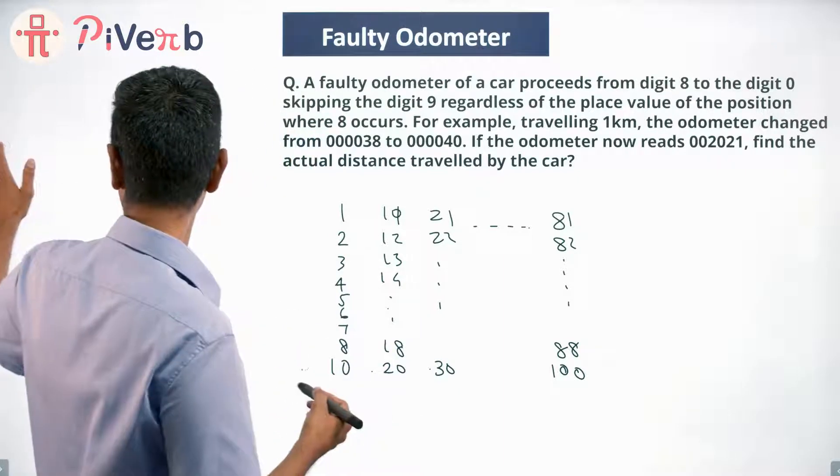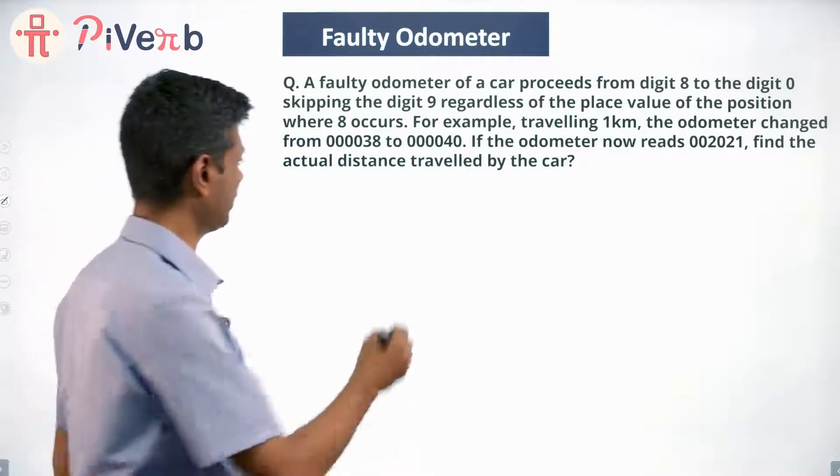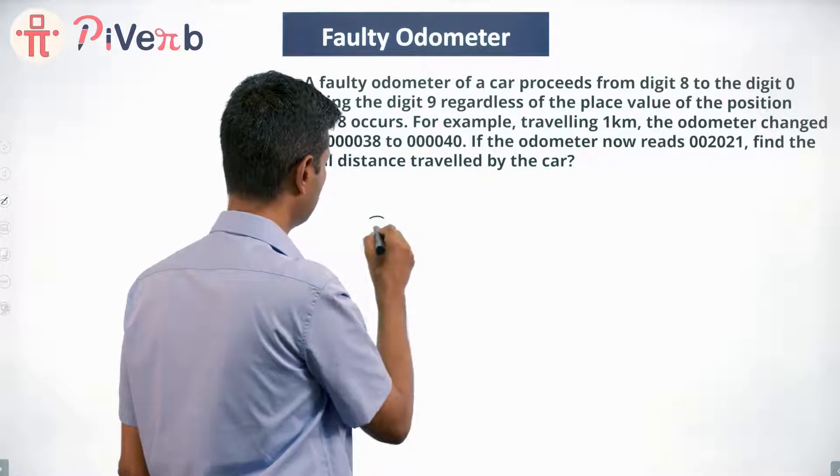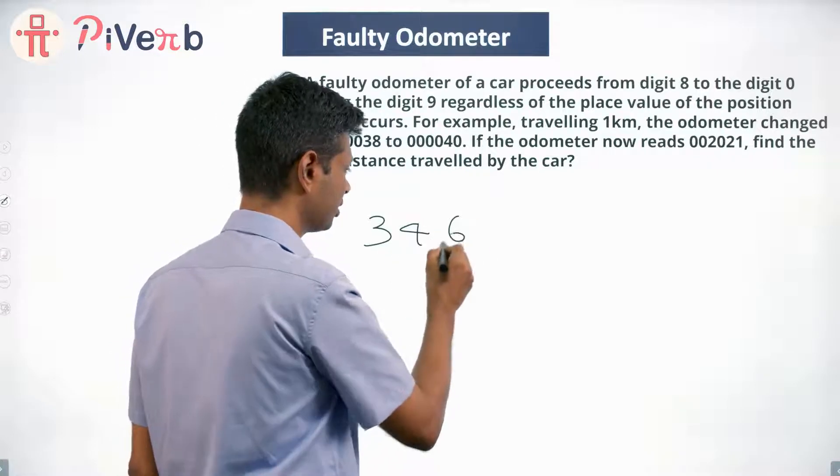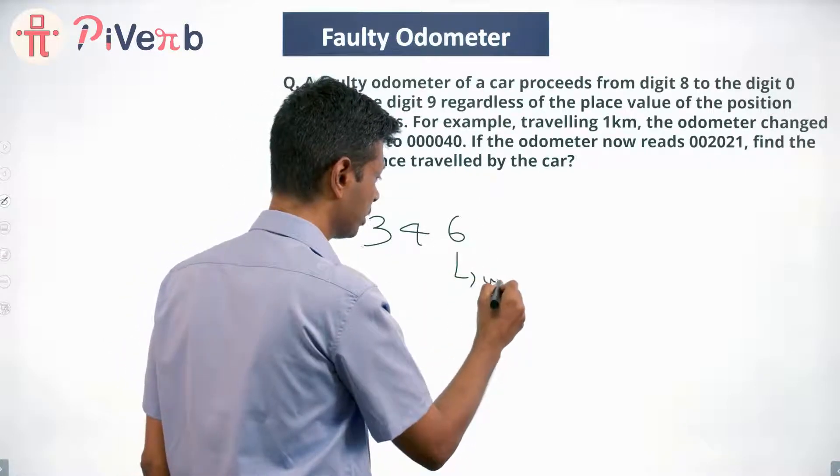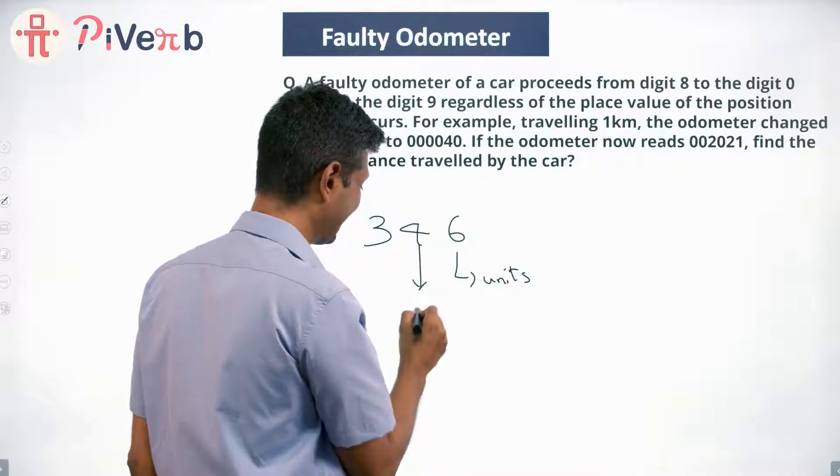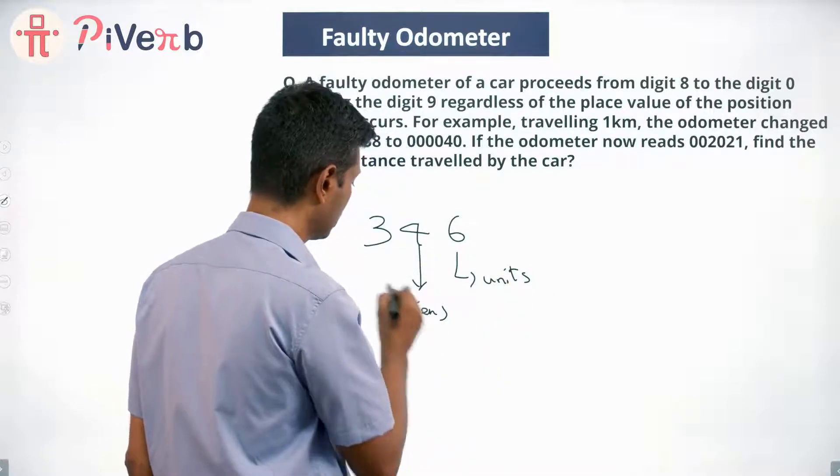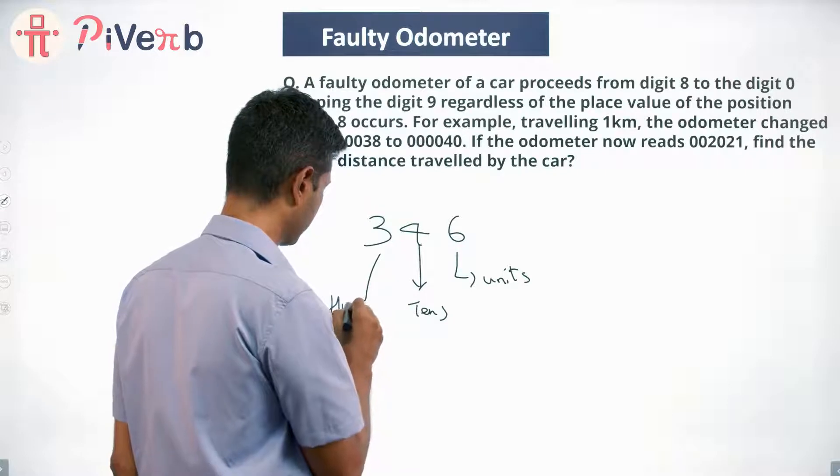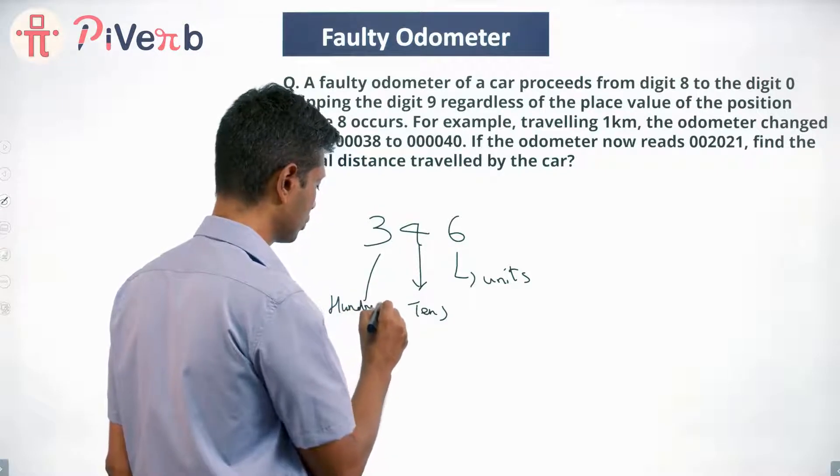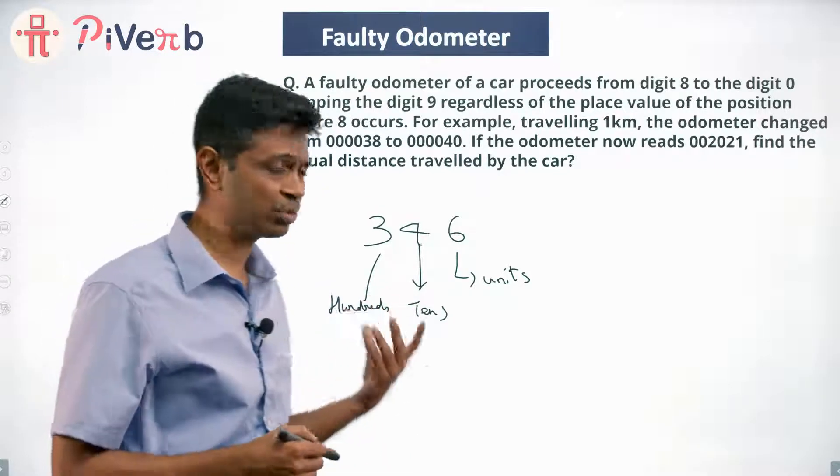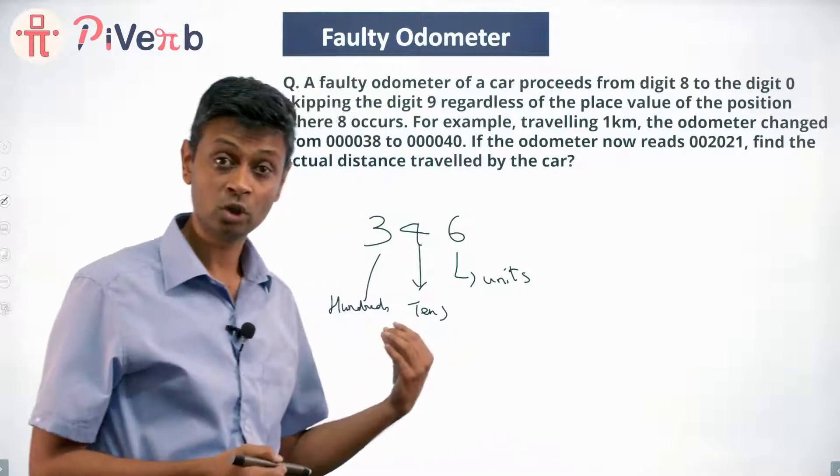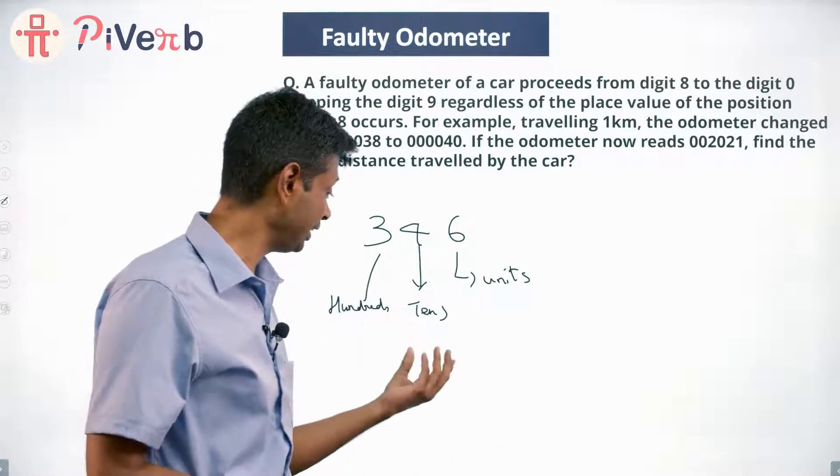So in decimal, if we have a number in regular math, suppose we have a number 346, what does this mean? 6 in the units place, 4 in the tens place, 3 in the hundreds place. Why we call it tens place? 10 units make a 10. Why do we call it hundreds place? 10 tens make a 100.